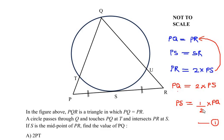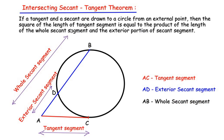Now we have to make a relationship between PT and PQ, and for this we use a theorem. The theorem is called the intersecting secant-tangent theorem. Here I have drawn a circle, and there is a tangent AC which touches the circle at only one point C — we call this the tangent segment.